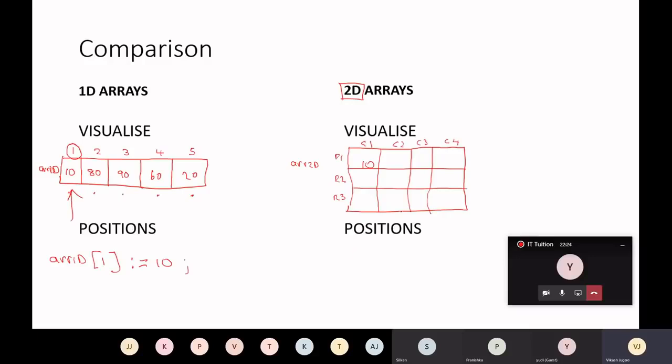But here with the 2D array, we now have to access it using two dimensions. So in this case, we would say something like ARR2D, which is the name, but now we need to specify the row and the column. So that is row 1 and column 1. And here we will say takes on the value 2.